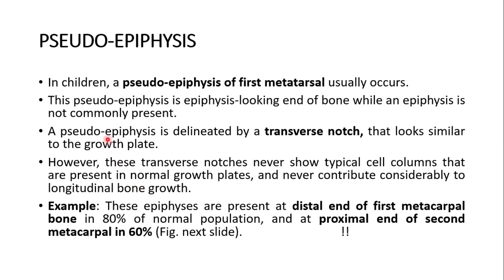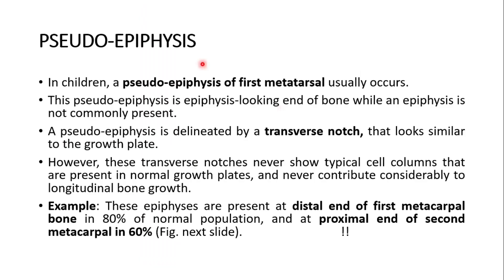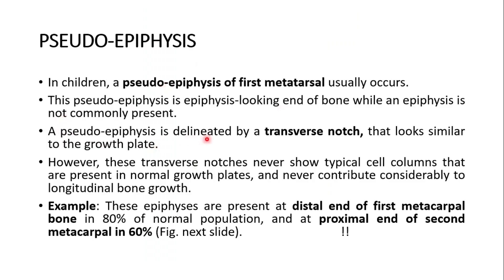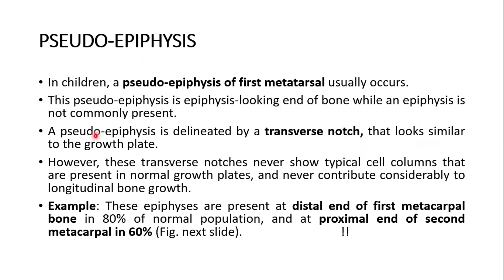Finally, we will discuss pseudo-epiphysis. In children, a pseudo-epiphysis of the first metatarsal usually occurs. This pseudo-epiphysis is an epiphysis-looking end of the bone while a true epiphysis is not commonly present — it looks like an epiphysis but in fact it is not. It is a notch-like process. A pseudo-epiphysis is delineated by a transverse notch that looks similar to the growth plate. However, these transverse notches never show the typical cell columns present in normal growth plates and never contribute considerably to longitudinal bone growth.